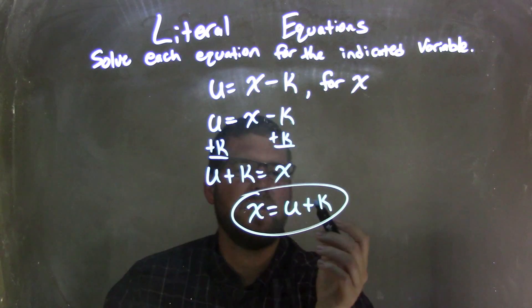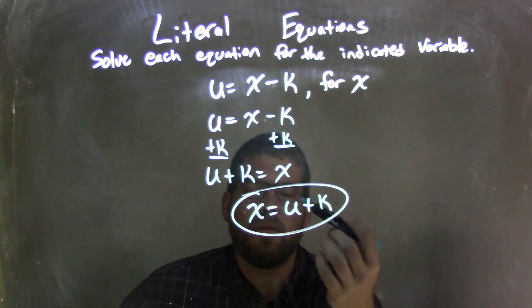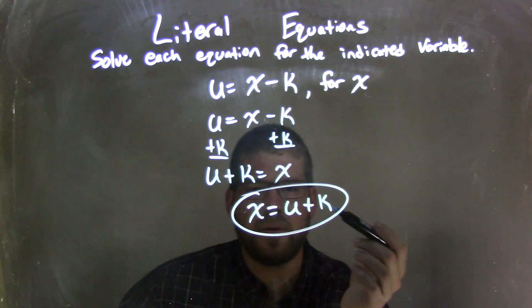x is by itself, it's isolated, there's no way we can simplify this. So our final answer here is x equals u plus k.